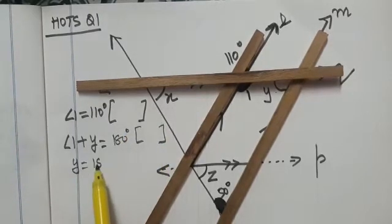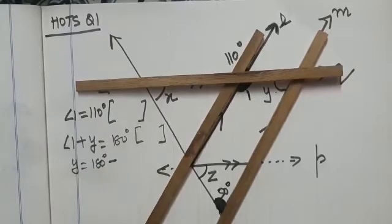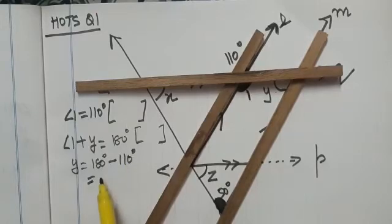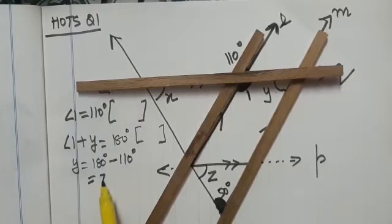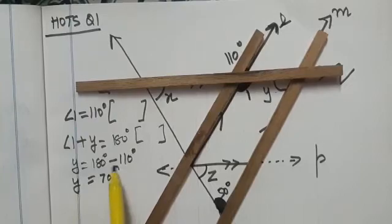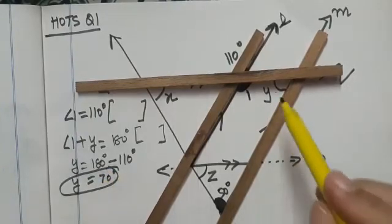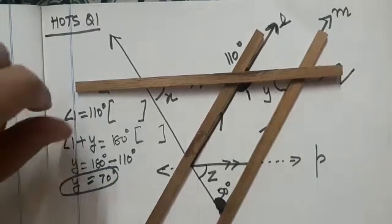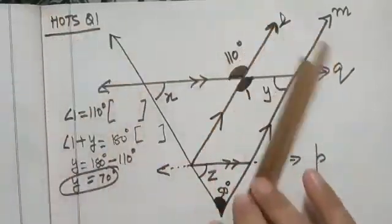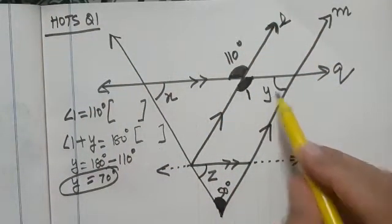And Y will be equal to 180 minus angle 1. And angle 1 is 110. So 180 minus 110, that gives us 70 degrees. So value of Y is 70 degrees. I hope it is clear up to this. We have found the value of Y.